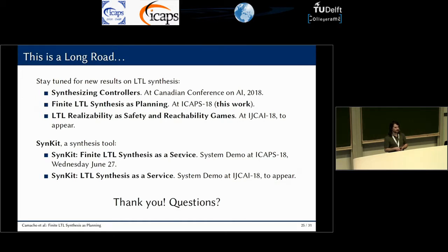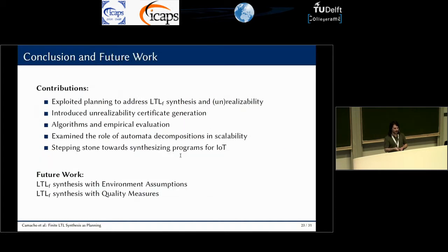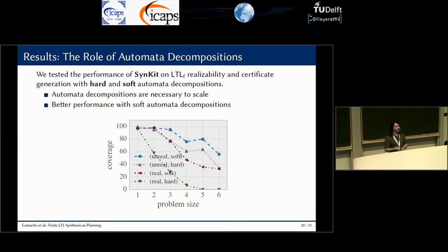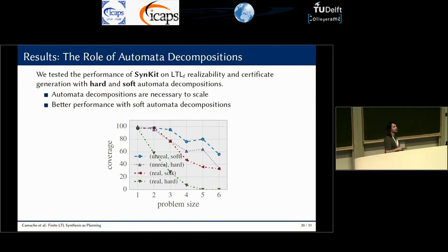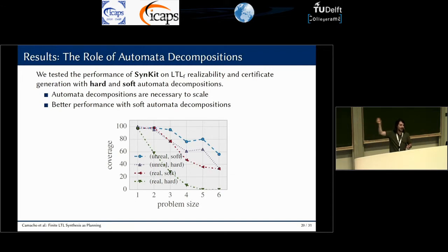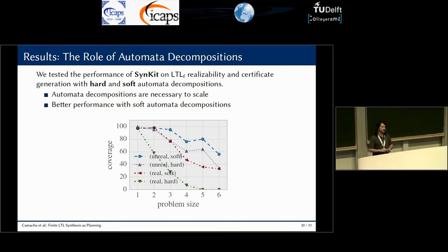Question: On the results slide, what does 'problem size' mean — the number of literals? Answer: No. We took problems from the LTL synthesis community, and when interpreted with finite semantics they turn out to be very easy. So we concatenated different problems — one, two, three, four, five, up to six. The numbers on the horizontal axis indicate how many problems were concatenated. Each individual problem has roughly four variables, so at size six we are solving more than 20 formulae with about 20 variables.